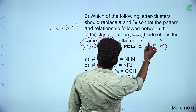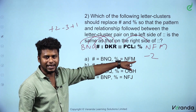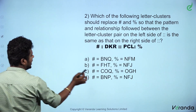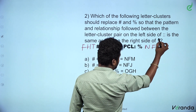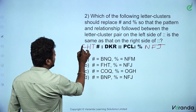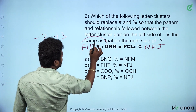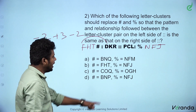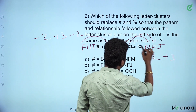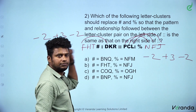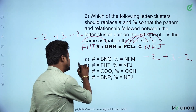This is the number of NFM. The number of NFM is equal to NFM. So the logic: you minus 2. Here, minus 2 plus 3 minus 2. So, what is the answer? Option B.